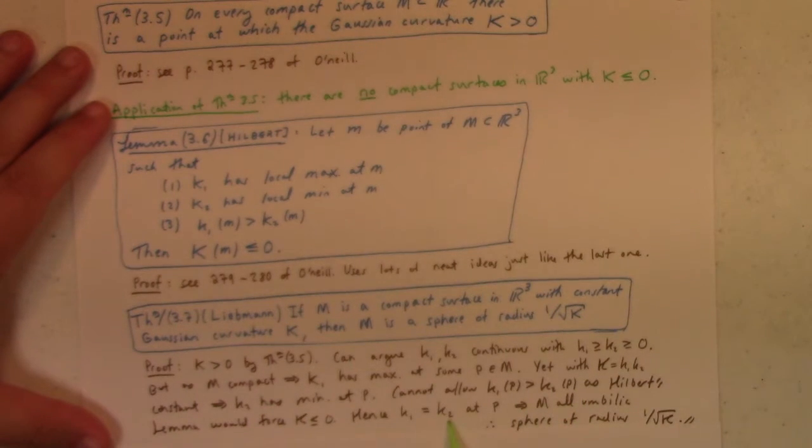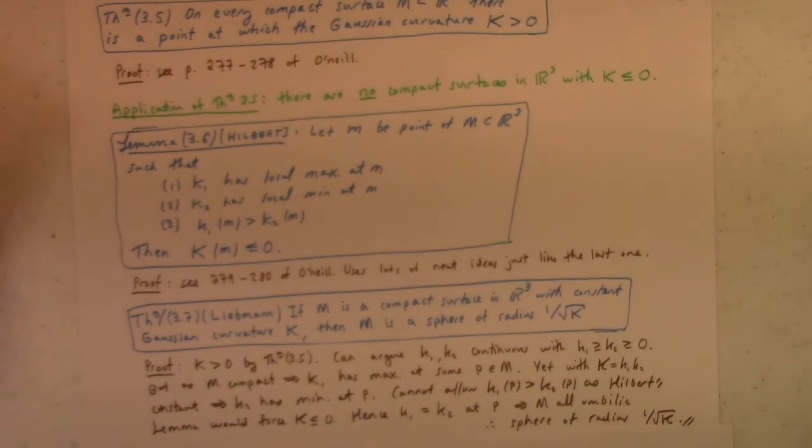Therefore, k1 has to be equal to k2 at p. But, this then implies m is all umbilic. Because the principal curvatures are equal at p. And then, so the sphere, it's all umbilic, which means that it's a sphere of radius 1 over root k. So that's a pretty neat result.